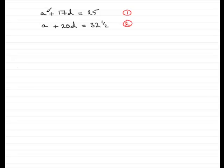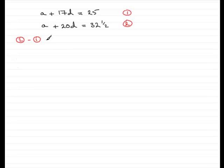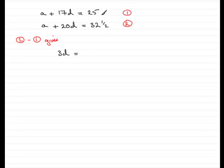I notice that the A's here are exactly the same, so I can eliminate the A's by simply subtracting the two equations. So I'm going to do equation 2 take away equation 1. The A take away A gets eliminated, and then 20D take away plus 17D is going to leave me with 3D. So we've got 3D equals, and 32.5 take away 25 leaves me with 7.5.